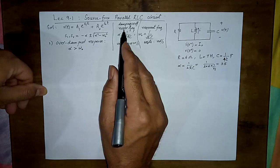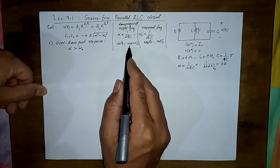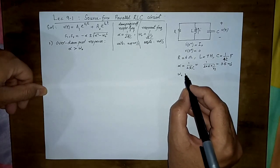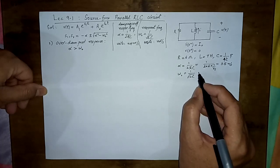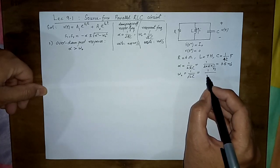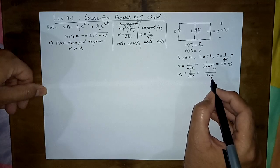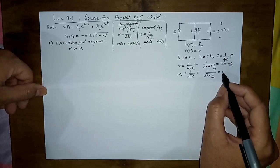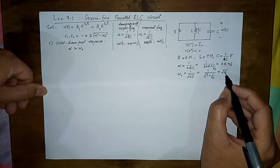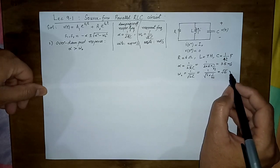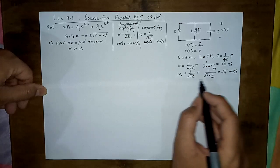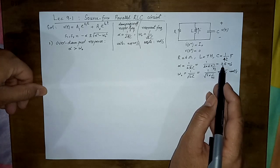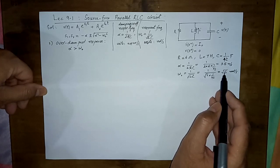Alpha is the damping coefficient, also called the neper frequency, with units of nepers per second. Omega_naught = 1/√(LC) = 1/√(7 × 1/42) = √6 radians per second. We can clearly see that alpha is greater than omega_naught because alpha-squared = 12.25 is greater than omega_naught-squared = 6. So this is a case of over-damped response.